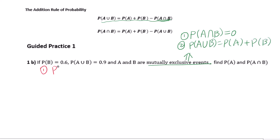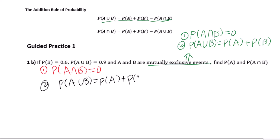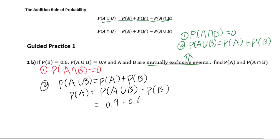Therefore, we know P(A∩B) equals 0. And P(A∪B) equals P(A) plus P(B), which means P(A) equals P(A∪B) minus P(B). Substituting: P(A) equals 0.9 minus 0.6, which equals 0.3.